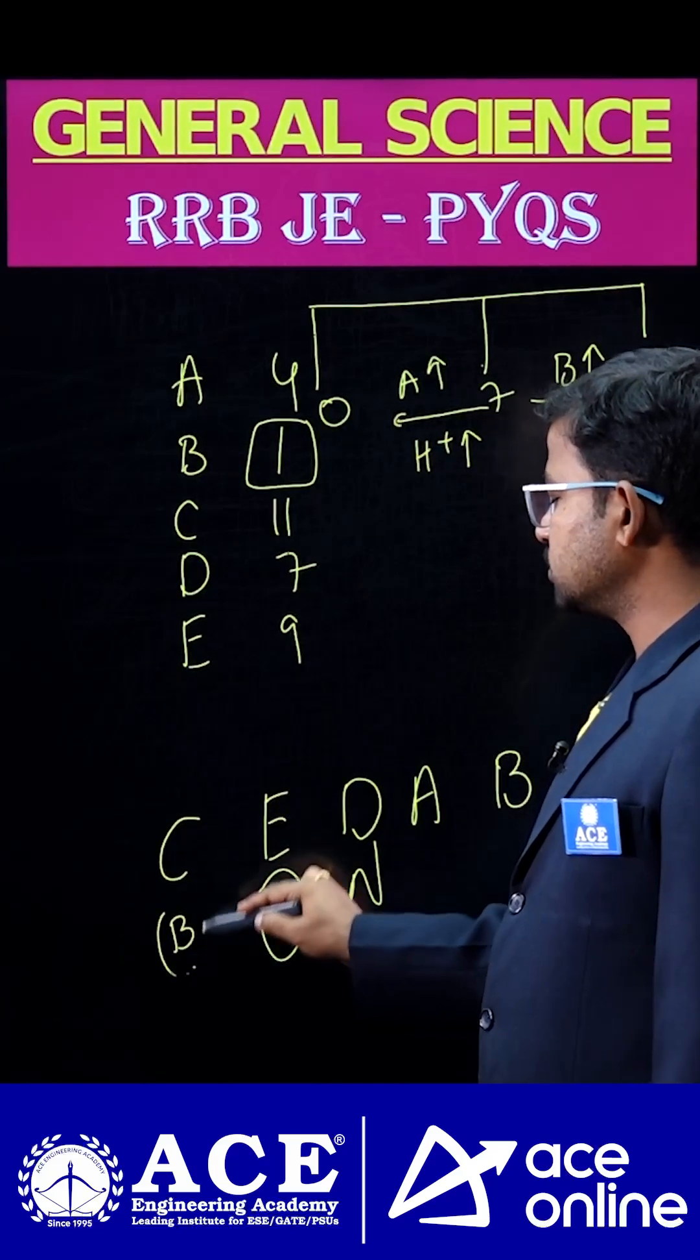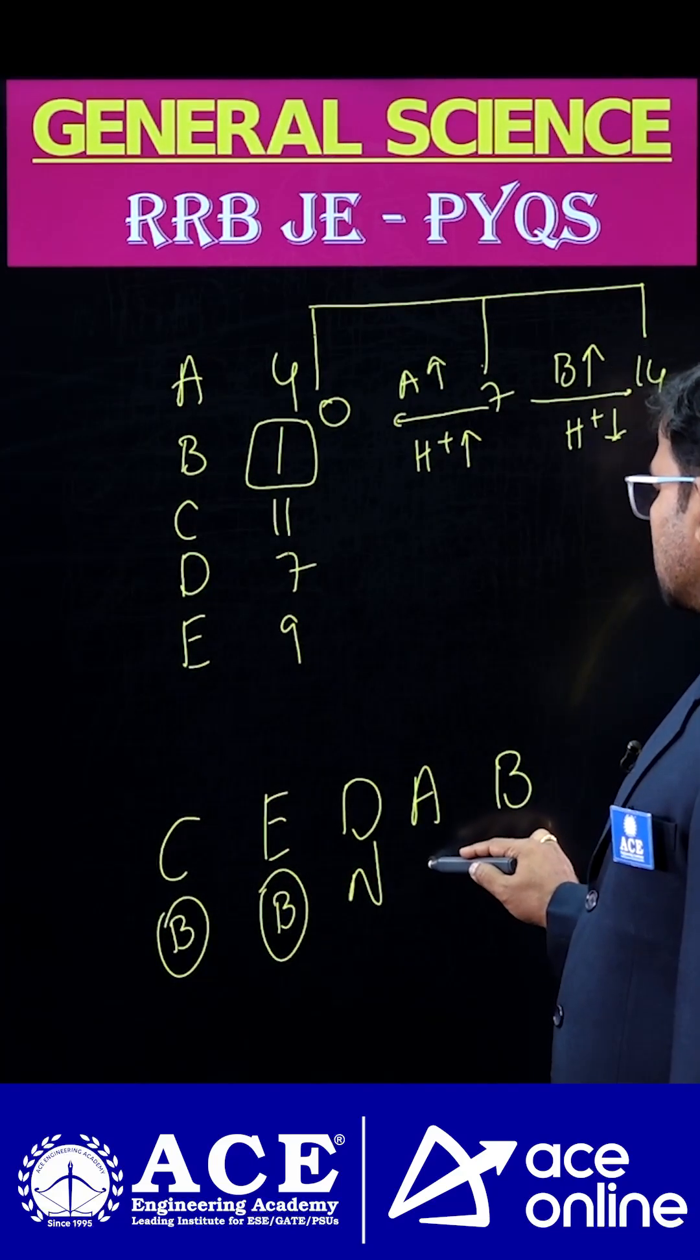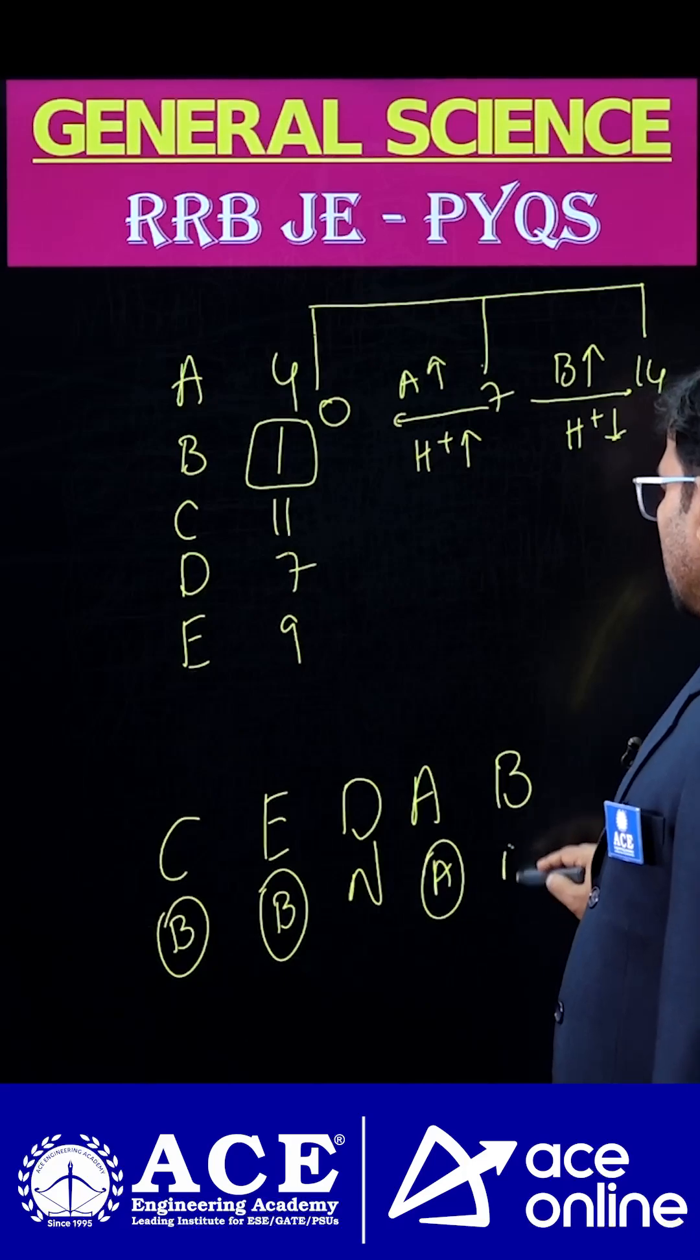These are the bases and these are the acids. Acids always have excess amounts of H+ ions.